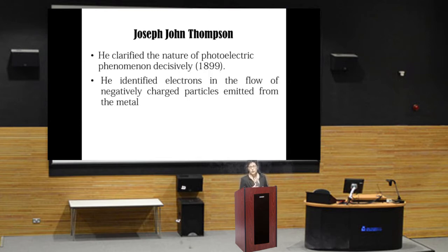Another scientist, J.J. Thompson or Joseph John Thompson, clarified the nature of photoelectric phenomena decisively in 1899. He identified electrons in the flow of negatively charged particles emitted from the matter.